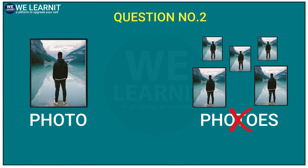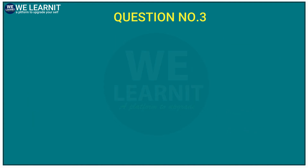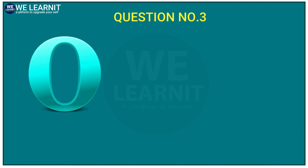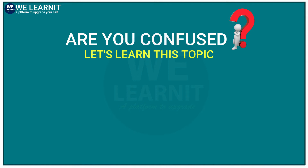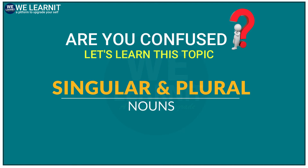Let me ask you another simple question. What is this? This is zero. So, what do we call more than one zero? If you thought 'zero' as z-e-r-o-e-s, then you are wrong. Are you getting confused? Alright, let's understand this concept in today's session, known as singular and plural nouns.